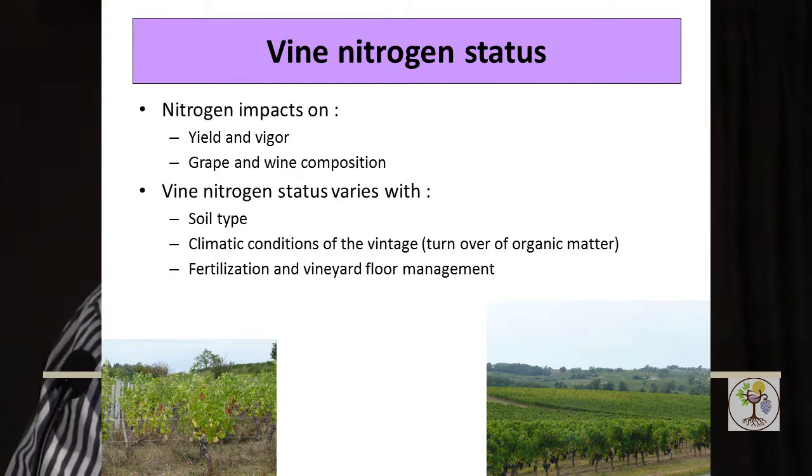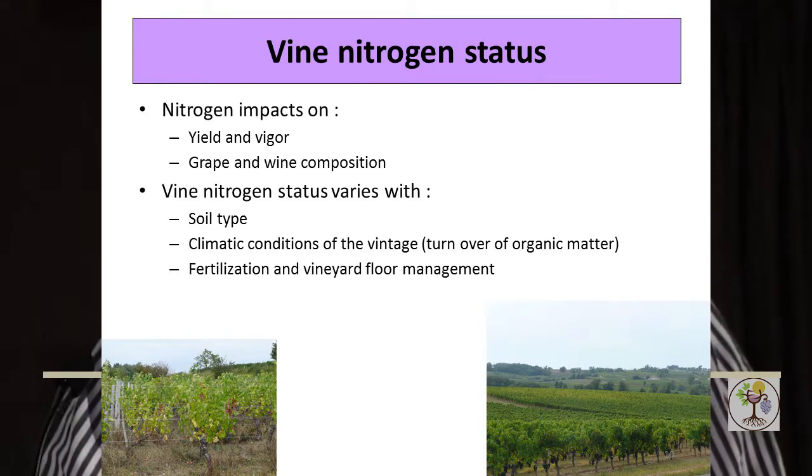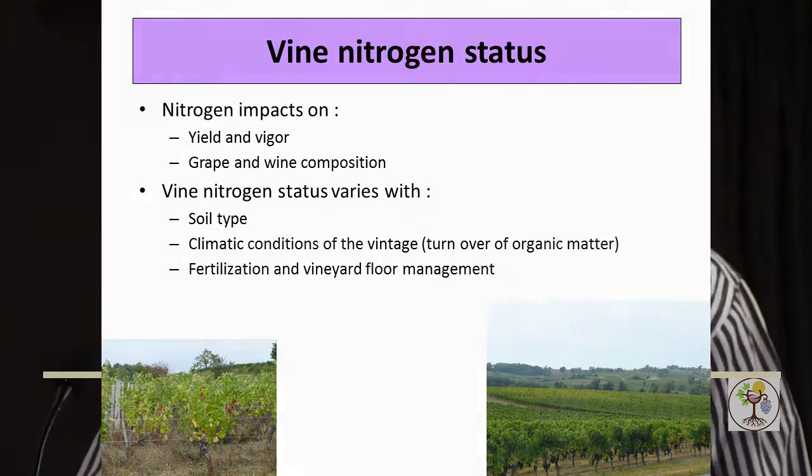Management practices like fertilization and floor management also have an impact on vine nitrogen. In this picture you can see how variable nitrogen can be in a vineyard block — for instance, low nitrogen produces yellow vines. This often happens because when the soil is moved before plantation, you have to be very careful not to destroy the terroir by moving the soil.